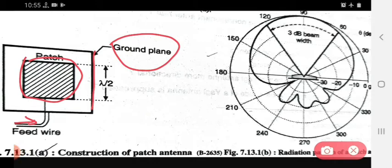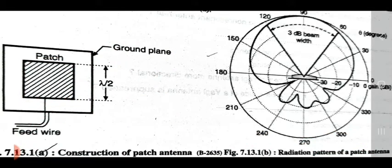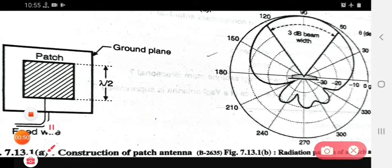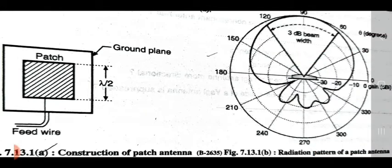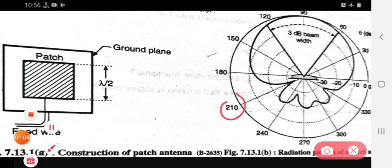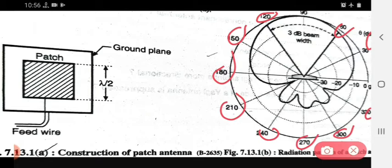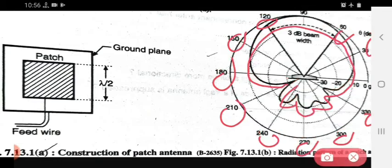This is the radiation pattern of patch antenna. In this radiation pattern, we see the 3 dB beamwidth. The degrees are indicated here. This is the portion of the radiation pattern of patch antenna.